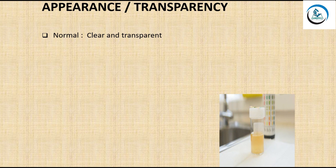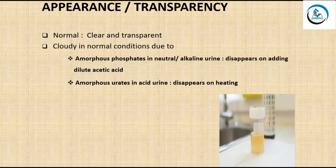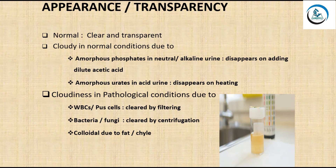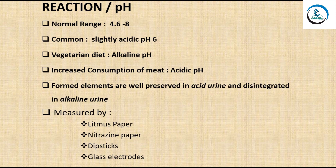The appearance or transparency of urine: normally urine is clear and transparent. Cloudiness can be due to normal or pathological conditions. Physiologically, at neutral or alkaline pH, amorphous phosphates may cause cloudiness that disappears on adding dilute acetic acid. In acidic urine, amorphous urates cause cloudiness that disappears on heating. Pathological cloudiness can be due to WBCs or pus cells, bacteria, fungi, or fat droplets.